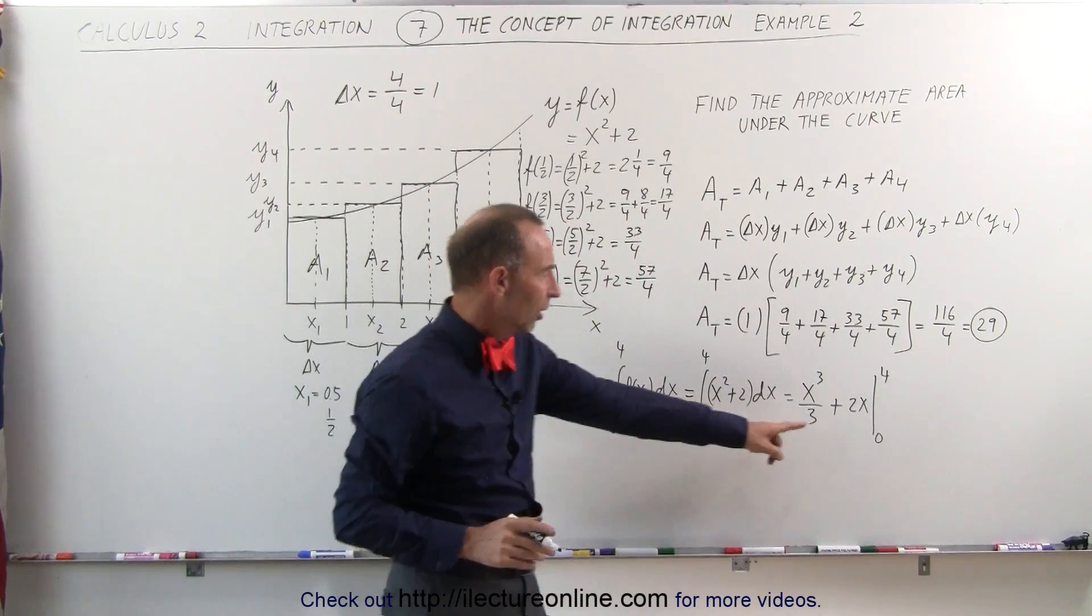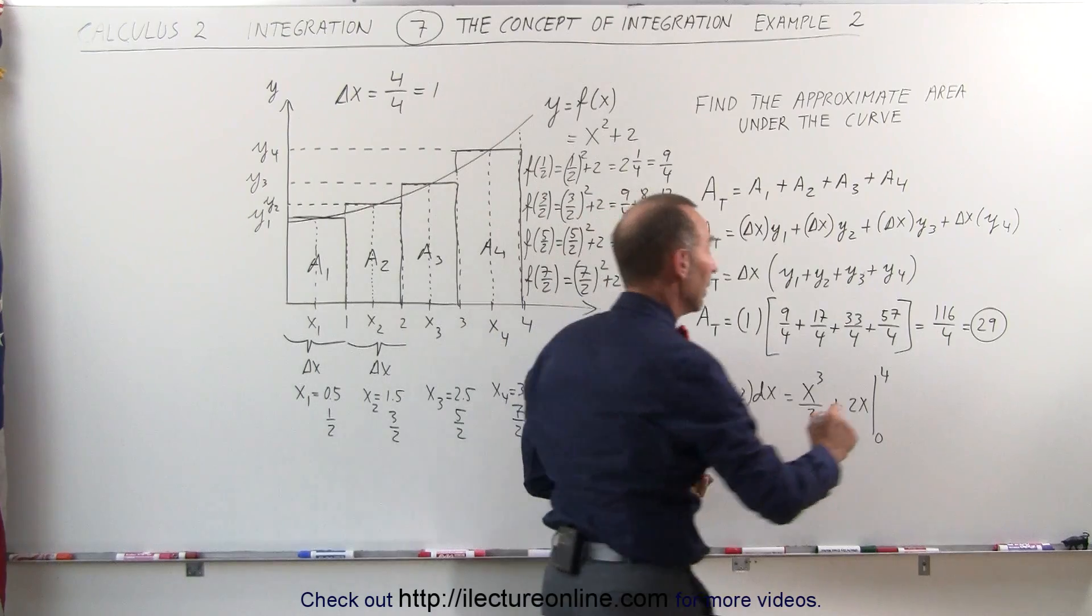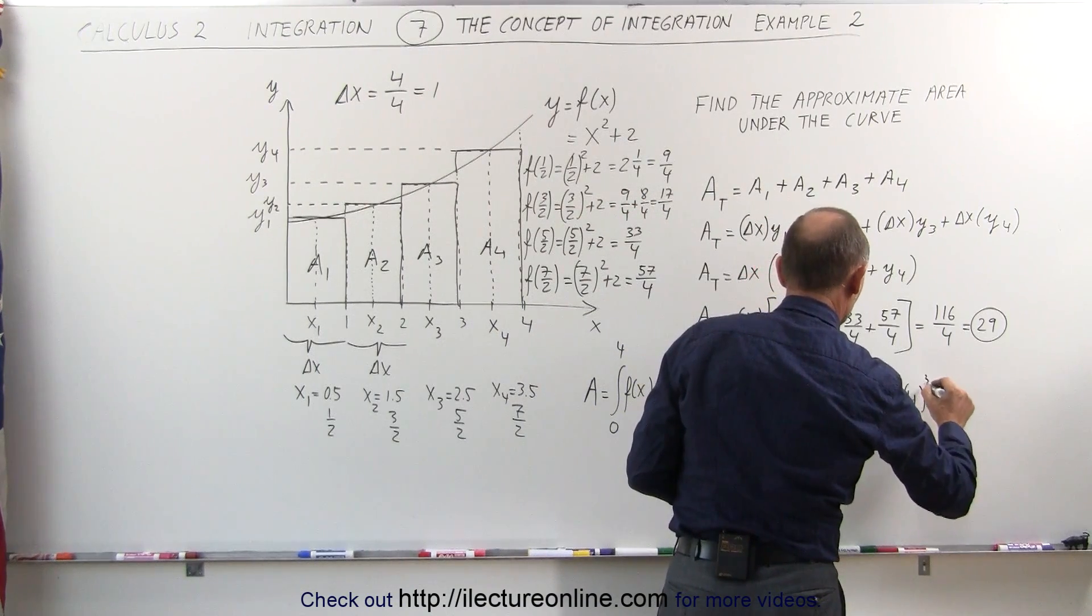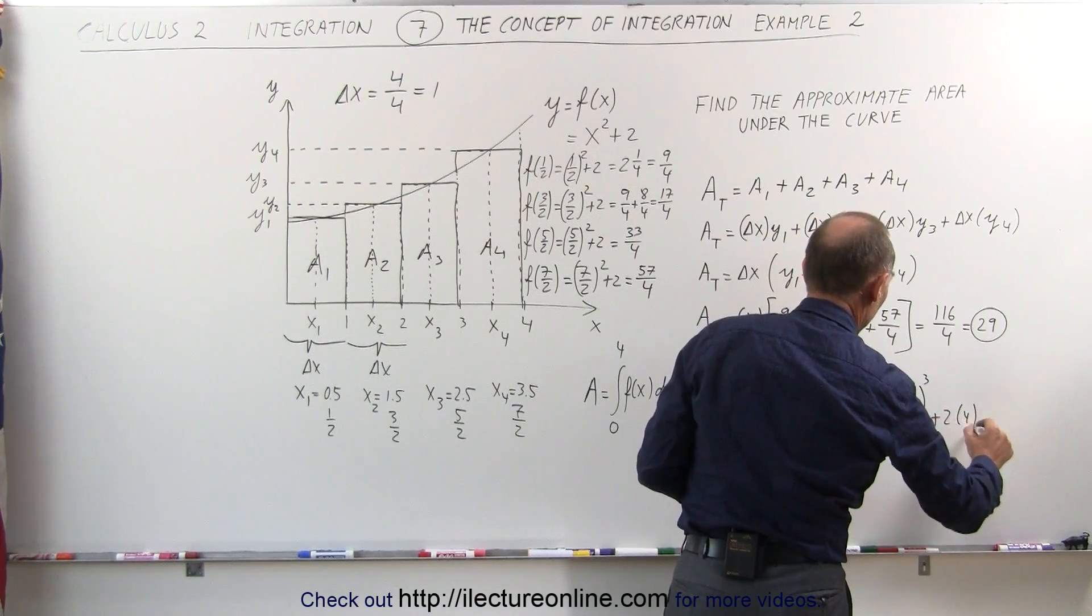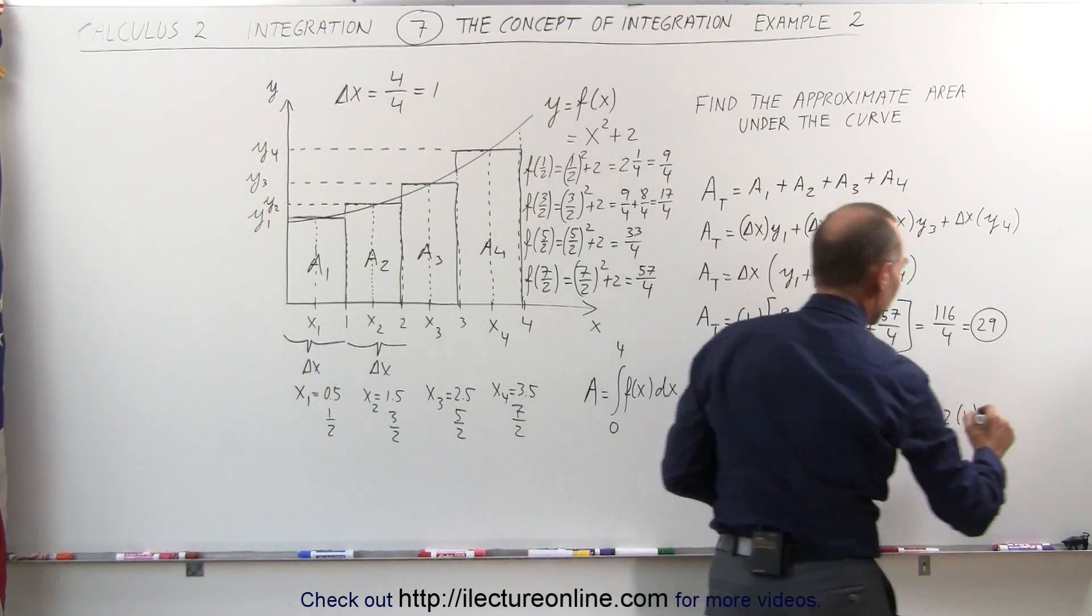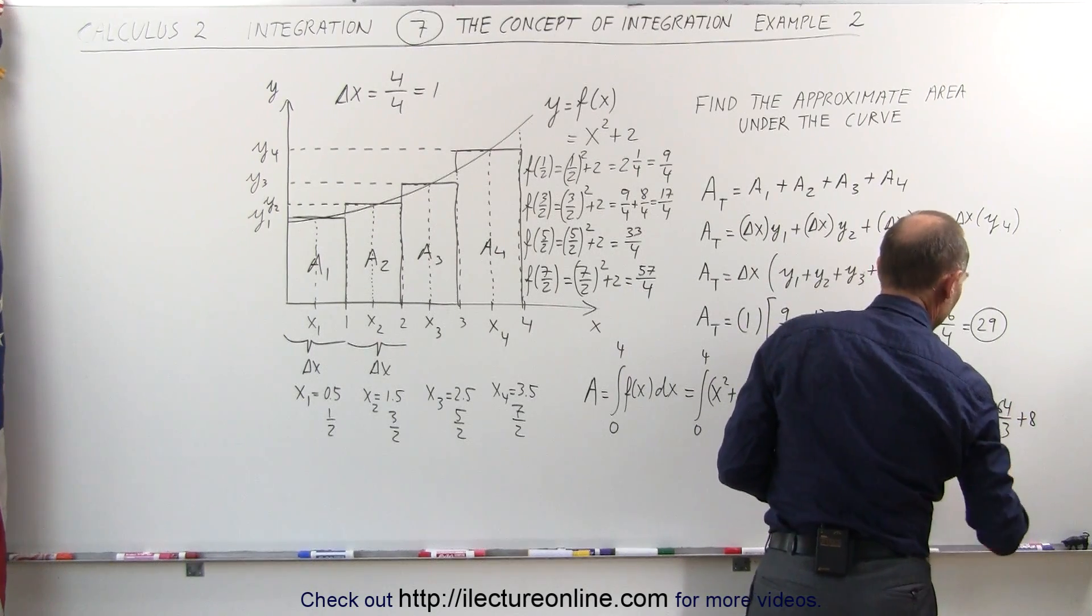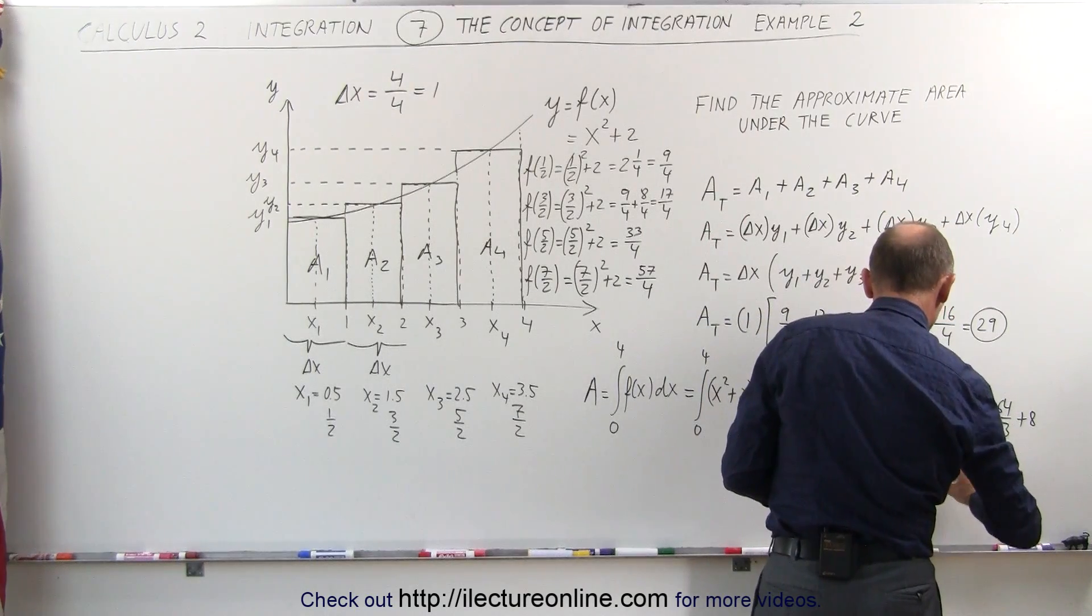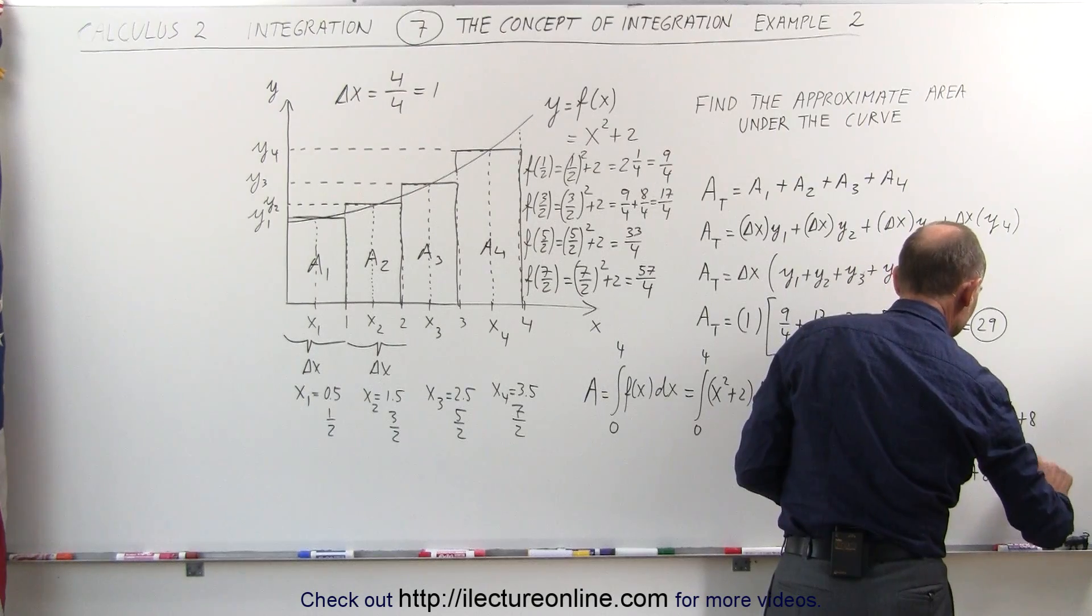Plug in the lower limits, you plug in 0 for x, you get 0, so we only need to plug in the upper limit. This is equal to 4 cubed divided by 3 plus 2 times 4. 4 cubed is 64, that's 64 divided by 3 plus 8. 64 divided by 3, that's 21 and a third, plus 8, which is equal to 29 and a third.